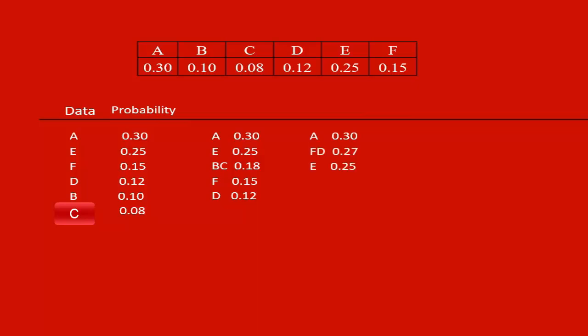We combine the last two, here B and C. If we add the two, its combined probability is 0.18. We then form a next column, again in the descending order of probabilities. In this way, we proceed till the end, till we are remained with just two groups of source data.